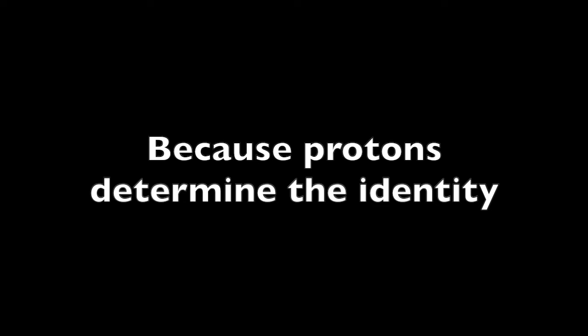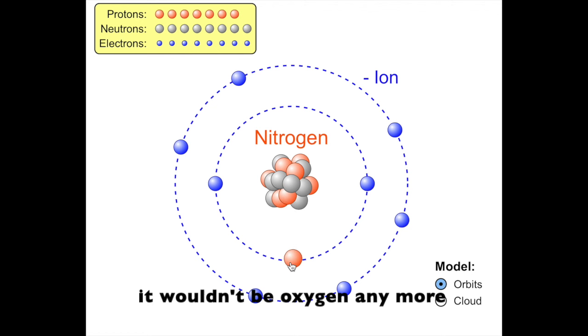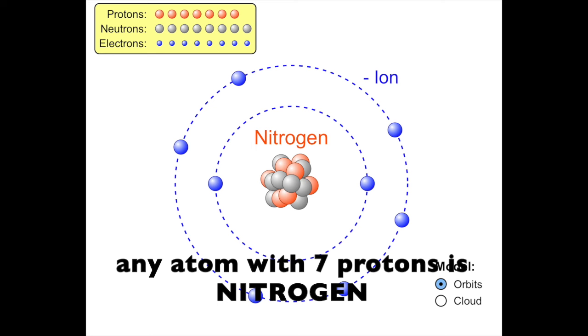Because protons determine the identity, if you were able to add a proton to an atom or take a proton away from an atom, the identity of that atom would change. For example, if we took a proton off oxygen, it wouldn't be oxygen anymore. It would be nitrogen, since any atom with seven protons is nitrogen.